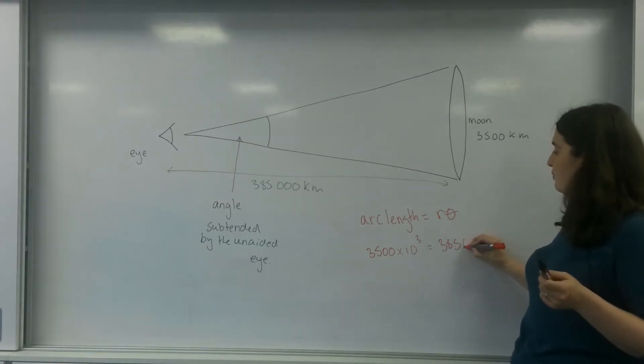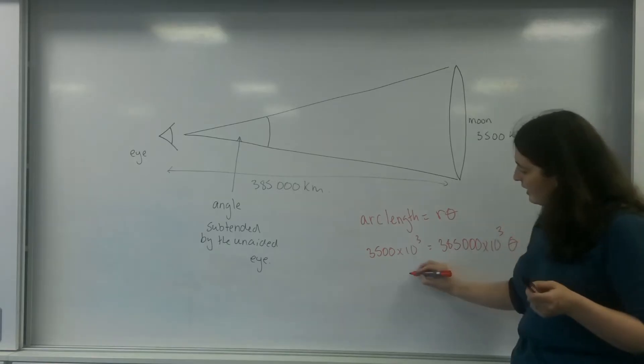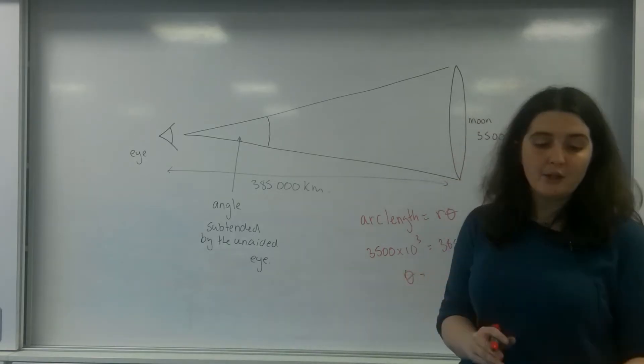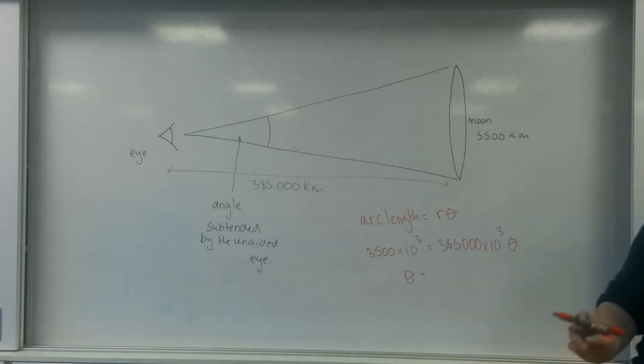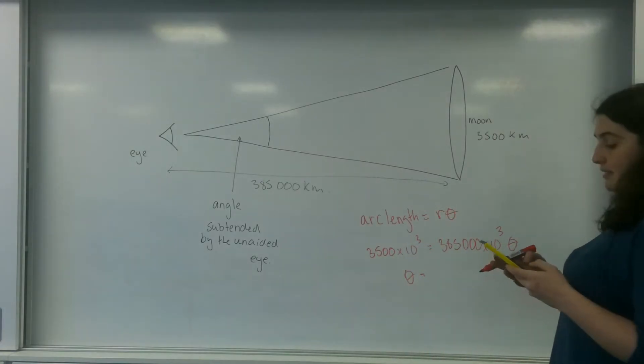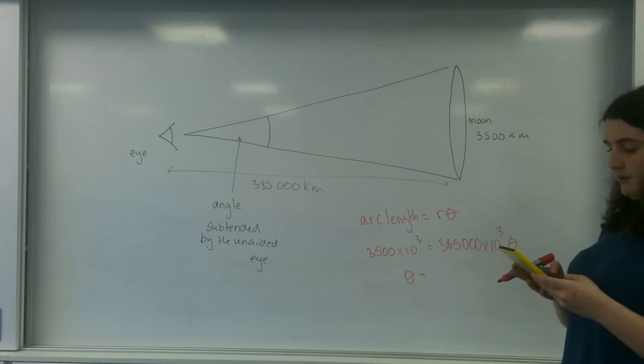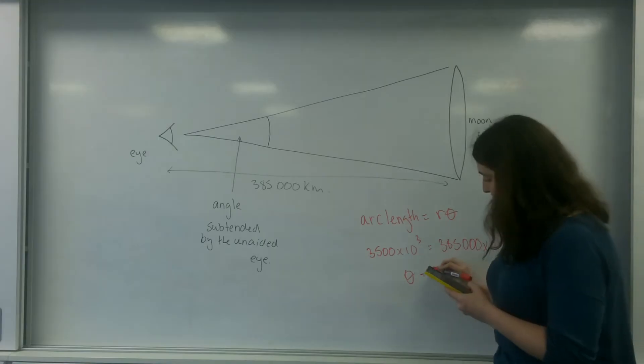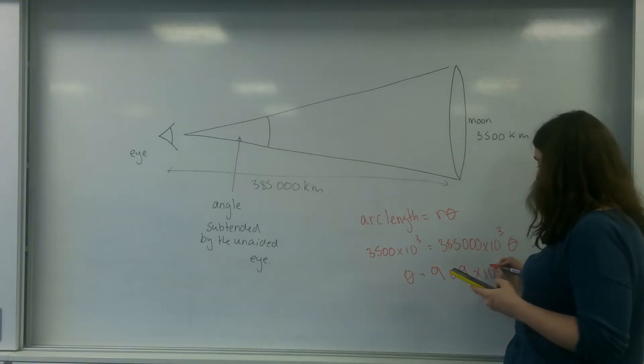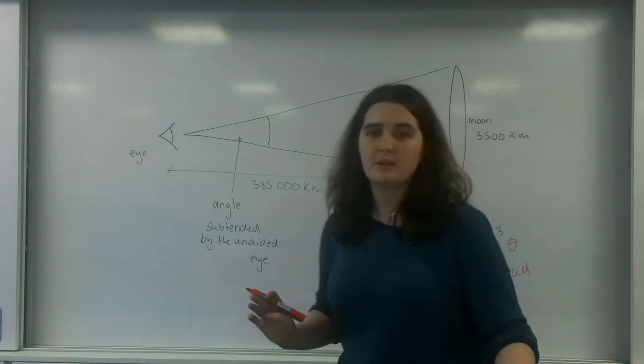So it's 385, 1, 2, 3 times 10 to the 3, times theta. So this angle, the angle subtended by the naked eye, if I just grab a calculator, is 3,500 times 10 to the 3, divided by 385,000 times 10 to the 3, which is going to be 9.09 times 10 to the minus 3 radians. So we're dealing with very tiny angles.